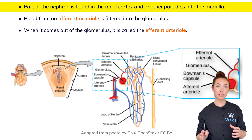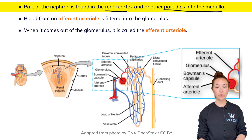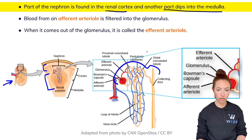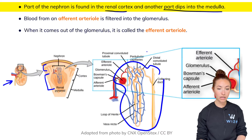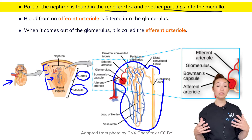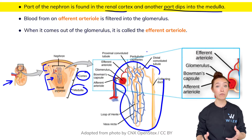One key thing about the nephrons is that part of them are located in the renal cortex and another part dips into the medulla. Here's our familiar image of the kidney — the cortex is the outer part and the renal medulla is inner. The nephron is this entire structure shown in yellow, and notice how part of it is in the cortex and another part dips into the medulla. You'll see why that's important as we talk about the different parts of the nephron and their functions.